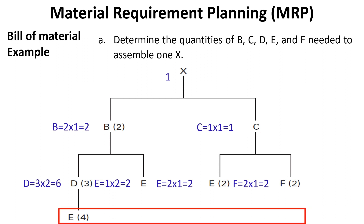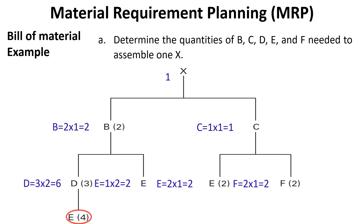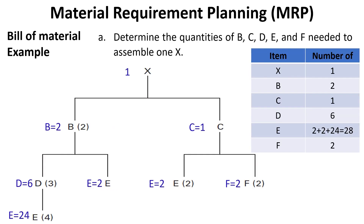In the last level, only one item is there. Four E's are required for the production of one D, so E equals four multiplied by six equals 24. Finally, the required quantities of items to produce one X are: two B's, one C, six D's, 28 E's, and two F's.